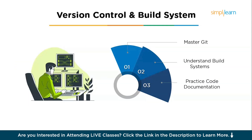Now let's look at version control and build systems. Just like in other software jobs, you will need to track your code and work with teammates. That's why it's important to learn Git, a version control system. With Git you can keep a history of all changes, work on features in separate branches, and merge everything together safely. Many companies will expect you to know this, so practice using Git as soon as you start doing projects. You should also understand the build system and practice code documentation.